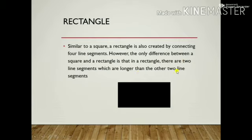However, the difference between square and rectangle is that in rectangle there are two line segments which are longer than the other two. That means the opposite sides are always equal to each other but their measurements are unequal.